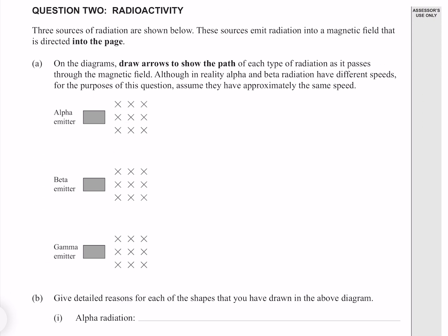Question 2. Three sources of radiation are shown below. These sources emit radiation into a magnetic field that is directed into the page. On the diagram, draw arrows to show the path of each type of radiation as it passes through the magnetic field. Although in reality, alpha and beta radiation have different speeds, for the purposes of this question, assume that they have approximately the same speed.